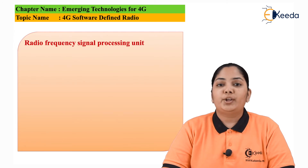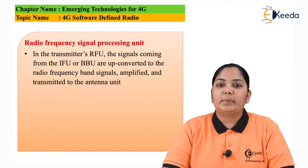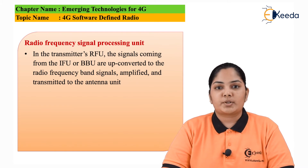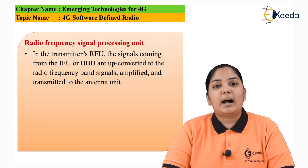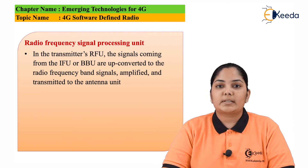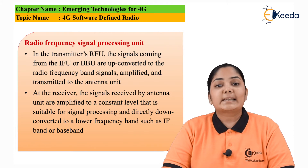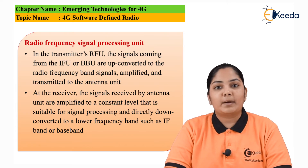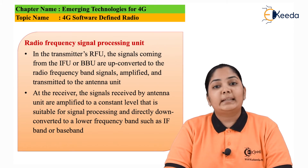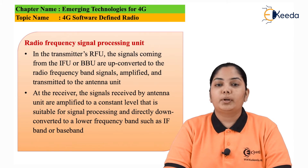Let us now see the next unit, the radio frequency unit. In this RFU, the signal coming from the baseband unit or the intermediate frequency unit is up-converted to the frequency used for transmission. Hence the actual transmission frequency is created here. At the receiver side, when the antenna gives a signal to the RFU, this signal is down-converted to the frequency required for the intermediate frequency unit for processing. The received signal inside the RFU is first amplified and then given to the IFU unit.